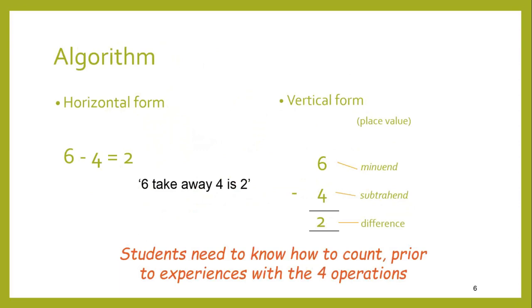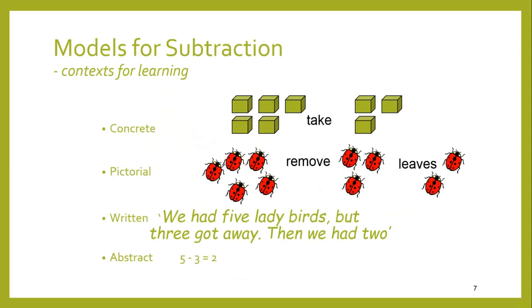Students need to be very proficient with counting prior to any experiences with subtraction or any of the operations. We need to use models going from the concrete to the pictorial to the written and the abstract. Imagine those blocks are ones we can pick up and move — take three away from five and we have five minus three is two. We can have pictures of five ladybirds, remove three of them, leaving two. We have five ladybirds but three got away — then there are two. Put the concrete, pictorial, written, and abstract side by side so you can see they all mean much the same thing: five take away three is two.